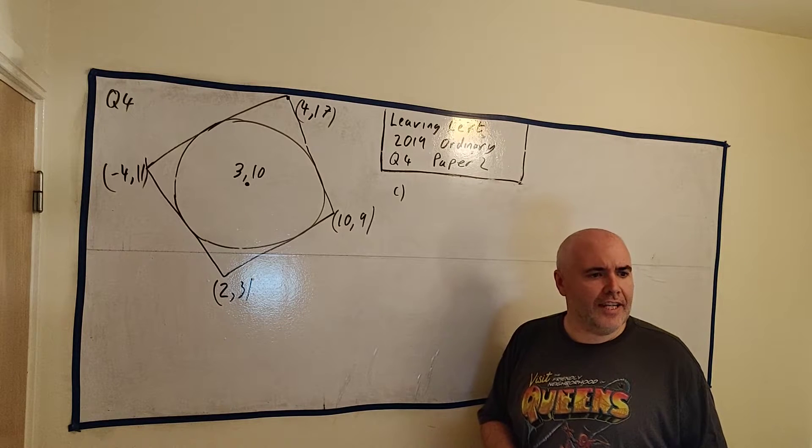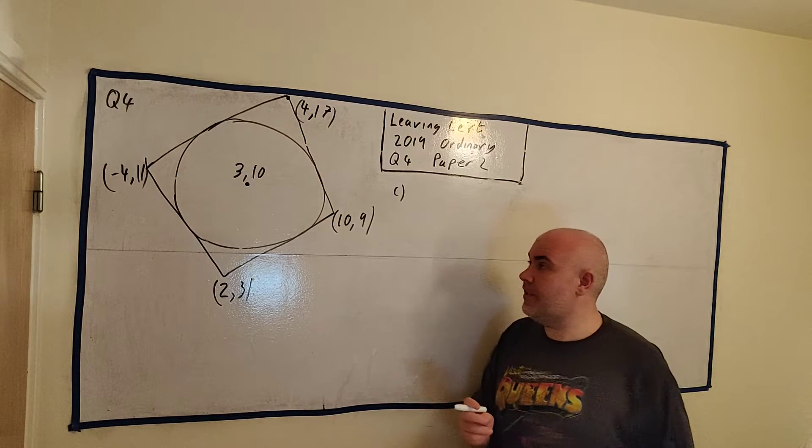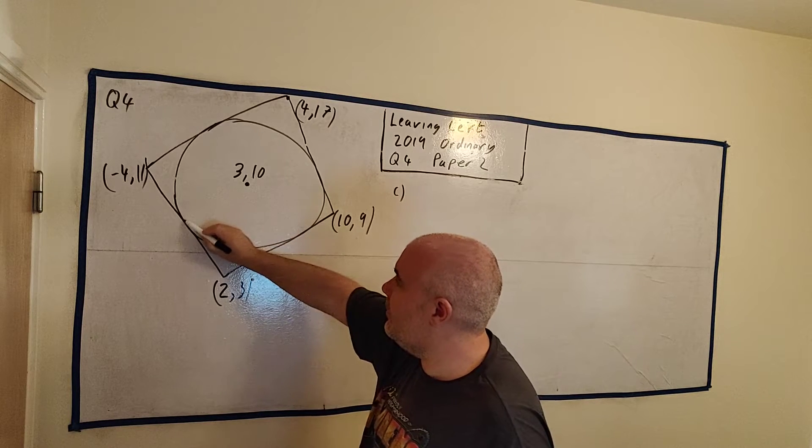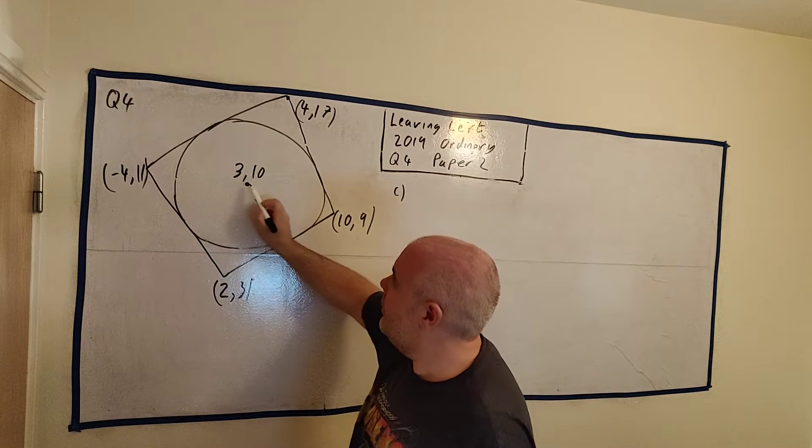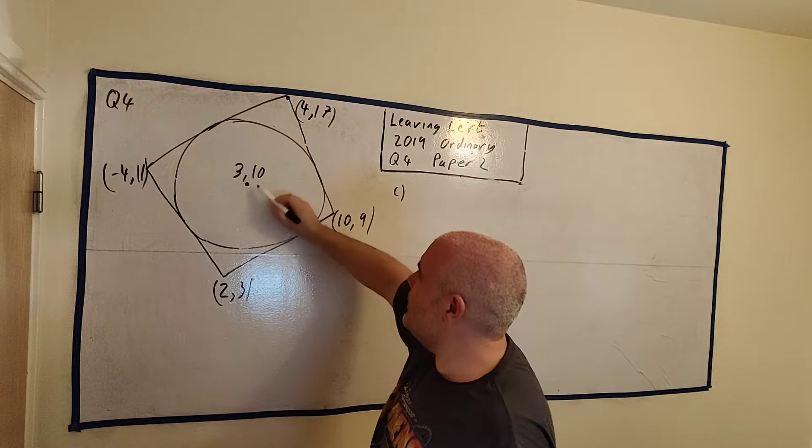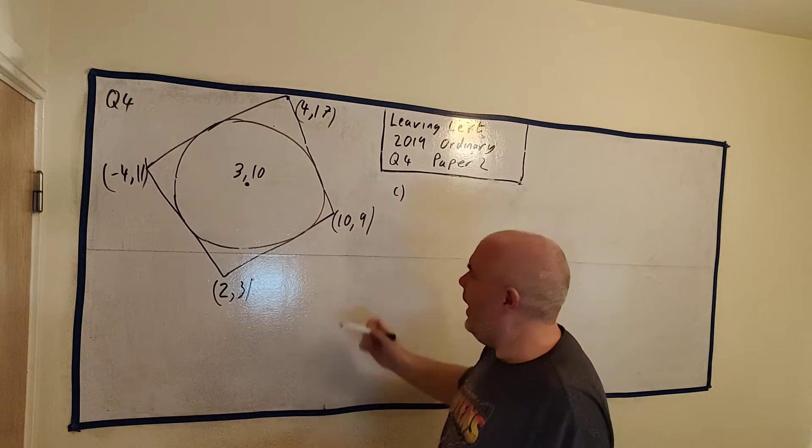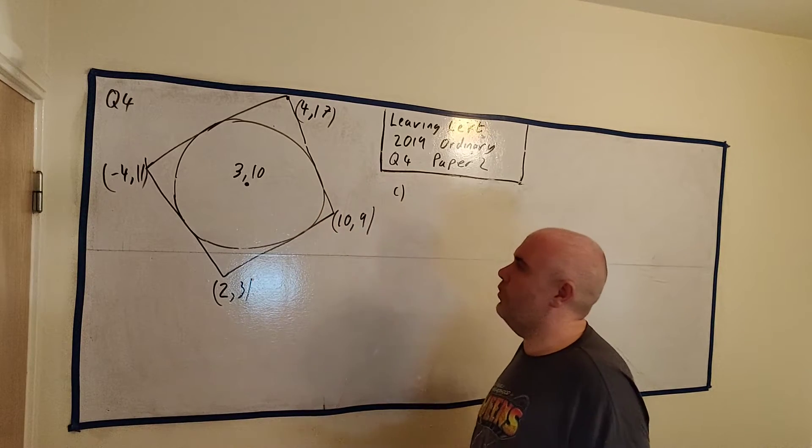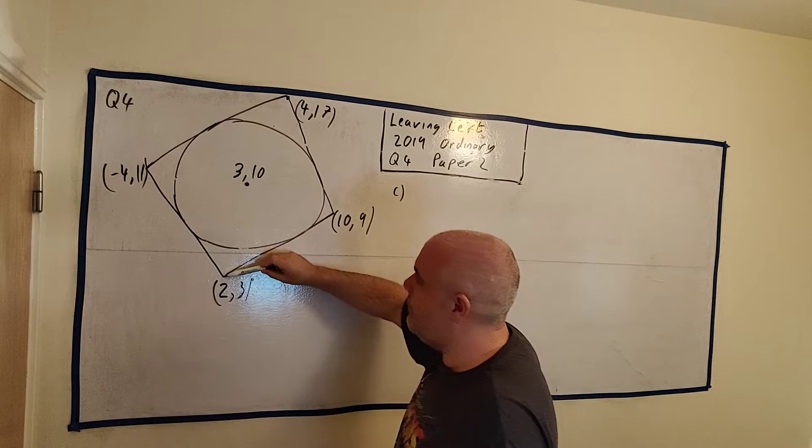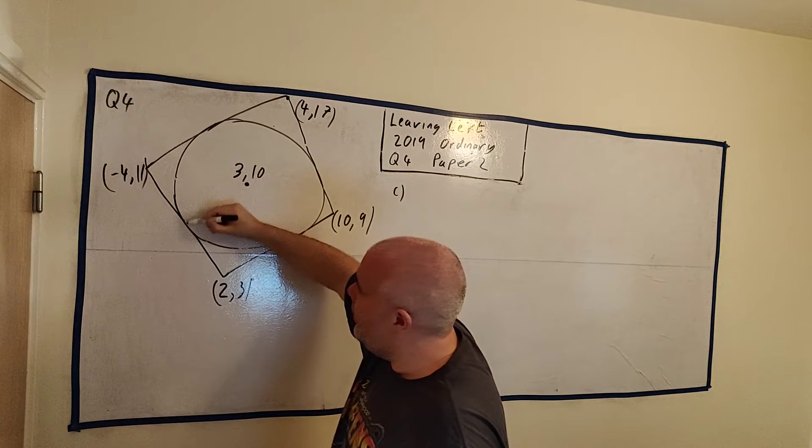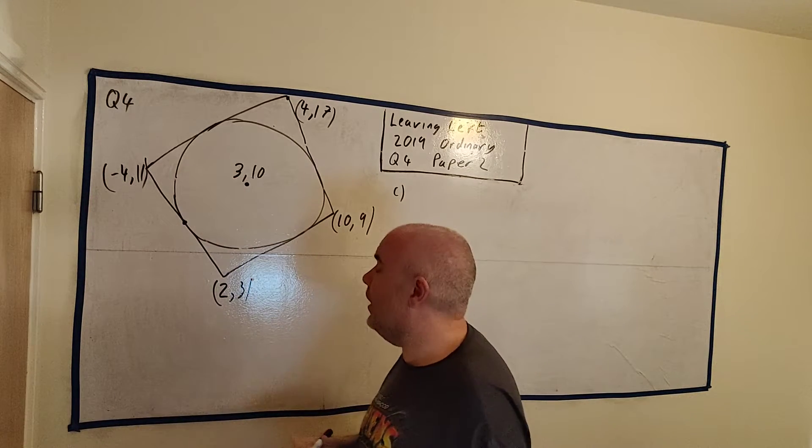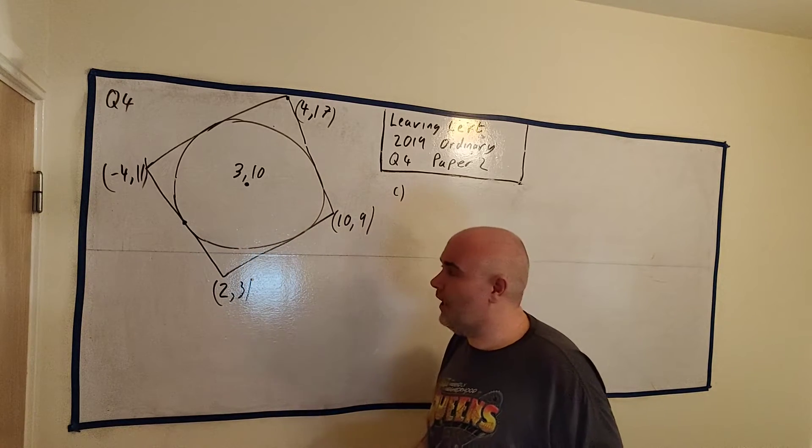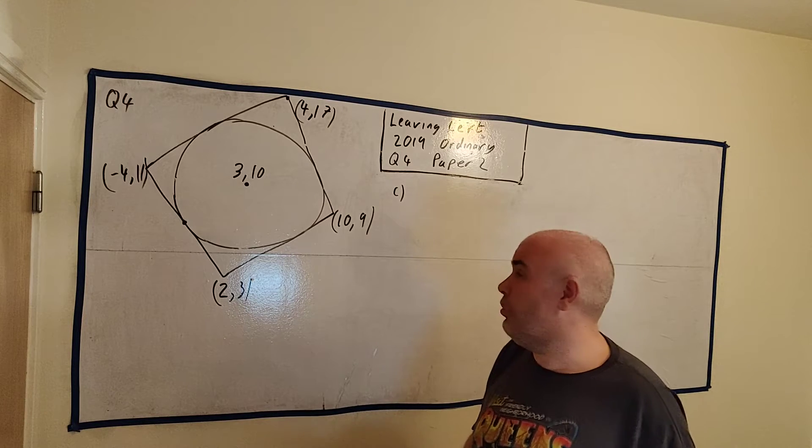Part C asks us to find the length of the radius of C. So here's C, so what they really want is the length of a line from here to the edge of the circle. Any edge of the circle. The problem is I don't know any points on the circle, and none of the points I know are on the circle, so we have to think a little cleverer way to do it. Some students might get halfway between here and here and get this point. That's a good idea, but there's an easier, shorter way to do it.